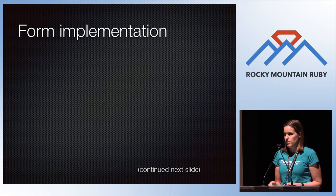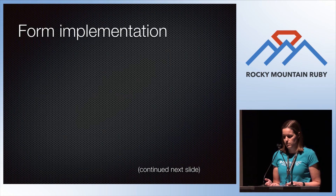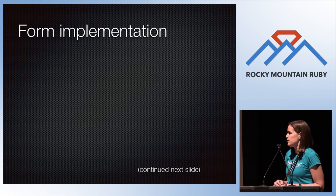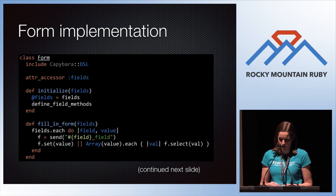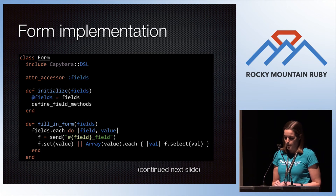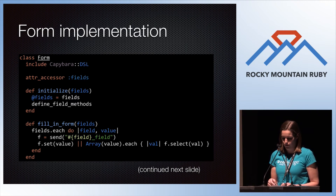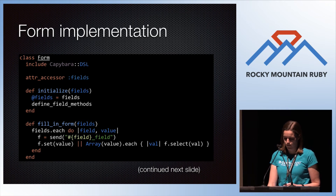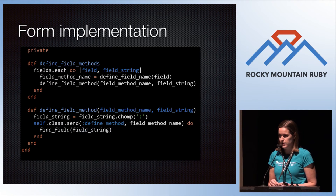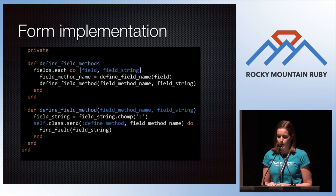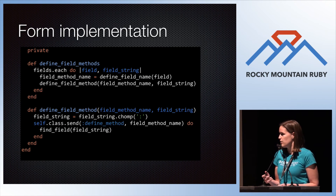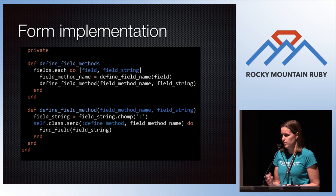I'm going to show you the implementation of form — don't worry about absorbing every little bit of this code, I'll give you the general idea. The public methods: initialize it by passing in the fields hash and calling a private method. Then there's a fill_in_form method that takes the values to fill in and sets each of the fields — calling first_name_field, last_name_field, and setting those. The private methods boil down to a simple define_method — basic metaprogramming — calling define_method to define each of those field method names.